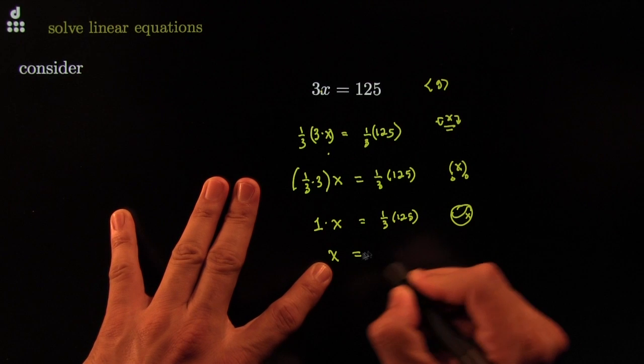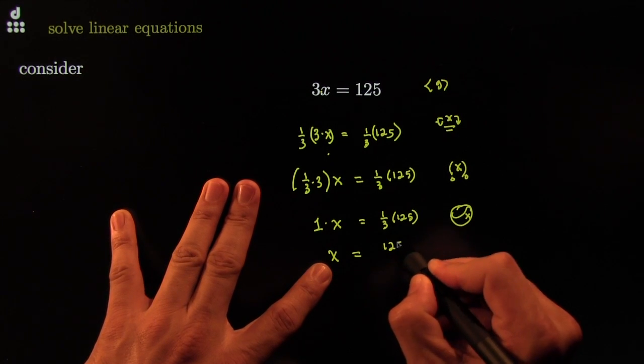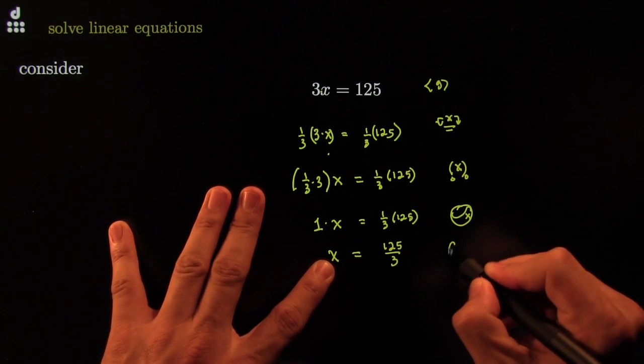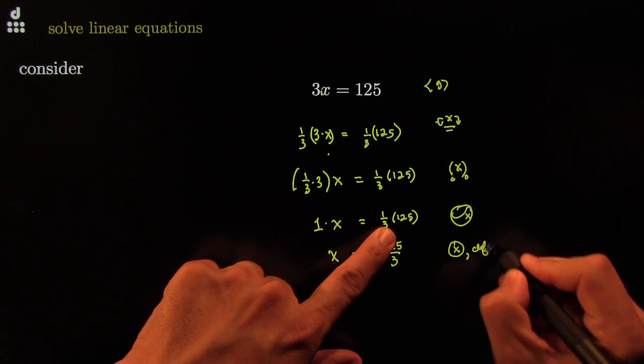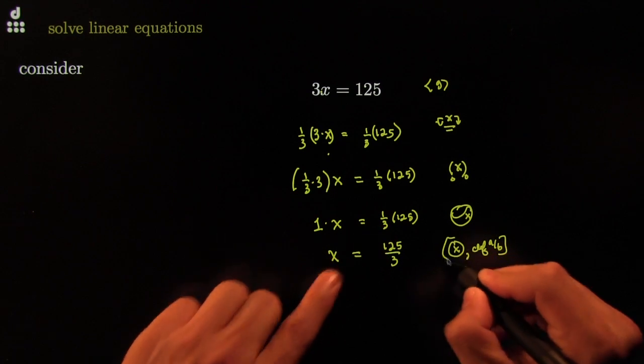So that you get just x is equal to 125 over 3. Now, on the left-hand side, I did multiplicative identity. 1 does nothing. On the right-hand side, I did definition of A over B. And there you go.